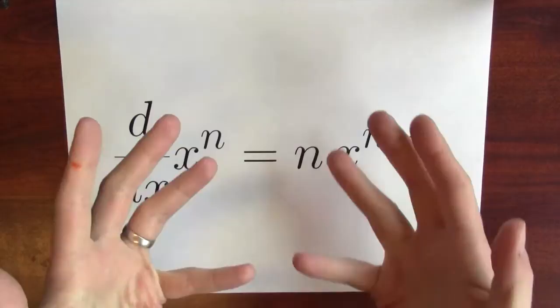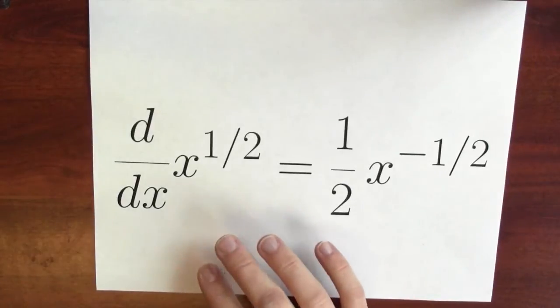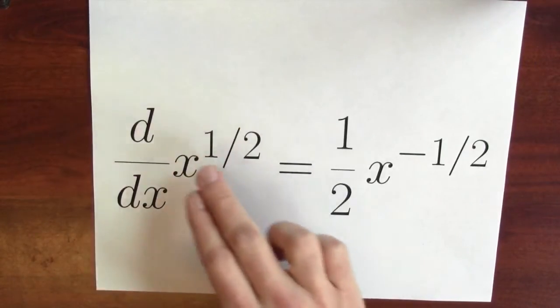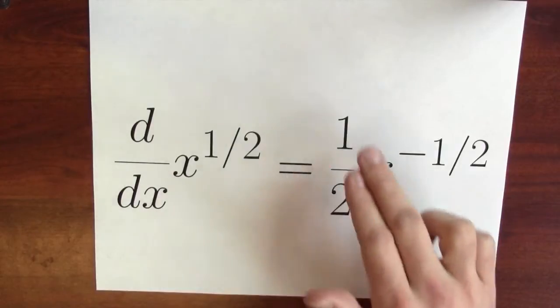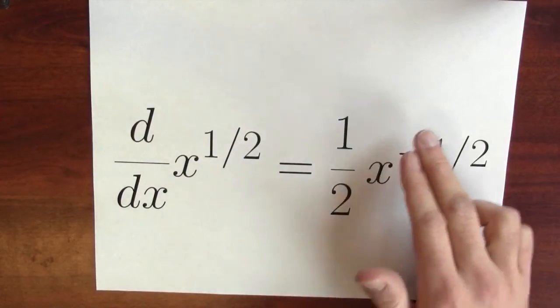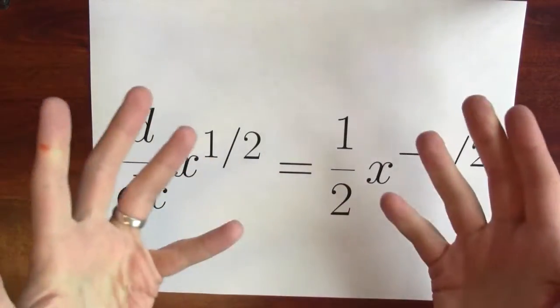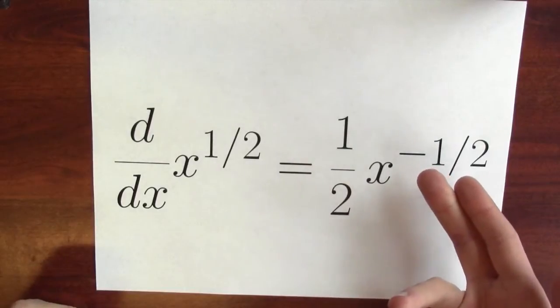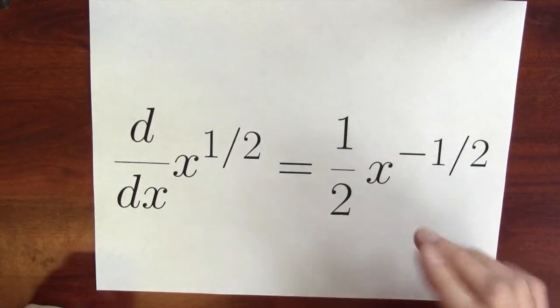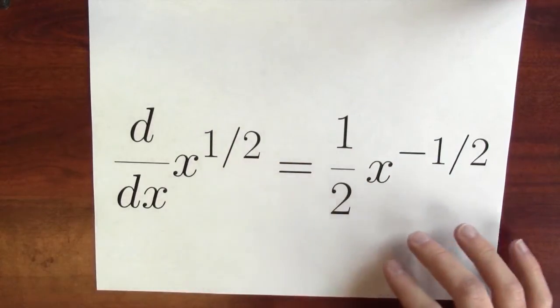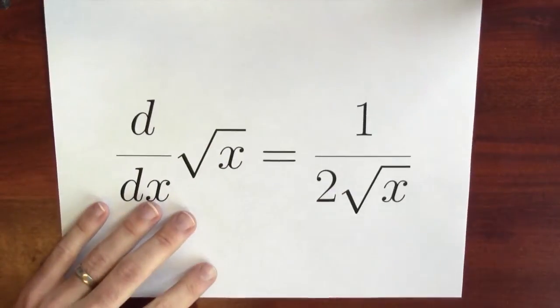The derivative of x to the n is n times x to the n minus 1. So if n is 1 half, then I've got that the derivative of x to the n, now 1 half, is n, 1 half, times x to the n minus 1. And conveniently, 1 half minus 1 is negative 1 half.